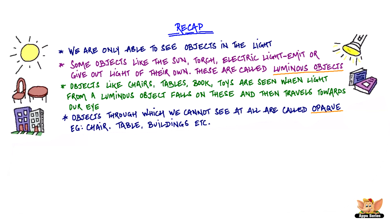Objects through which we cannot see at all are called opaque. For example, chair, table, buildings, etc.